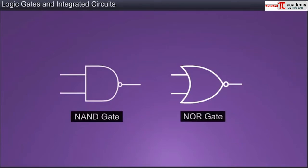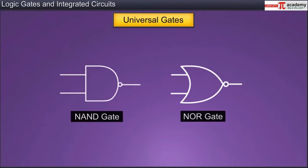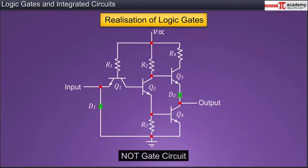NAND and NOR gates are also called universal gates, as they can be used to create all other forms of logic gates like the AND, OR, and NOT gates. Logic gates in a circuit are realized by combinations of electronic devices like diodes and transistors, in combination with resistors, inductors, and capacitors. For example, here is a circuit showing the construction of a NOT gate.